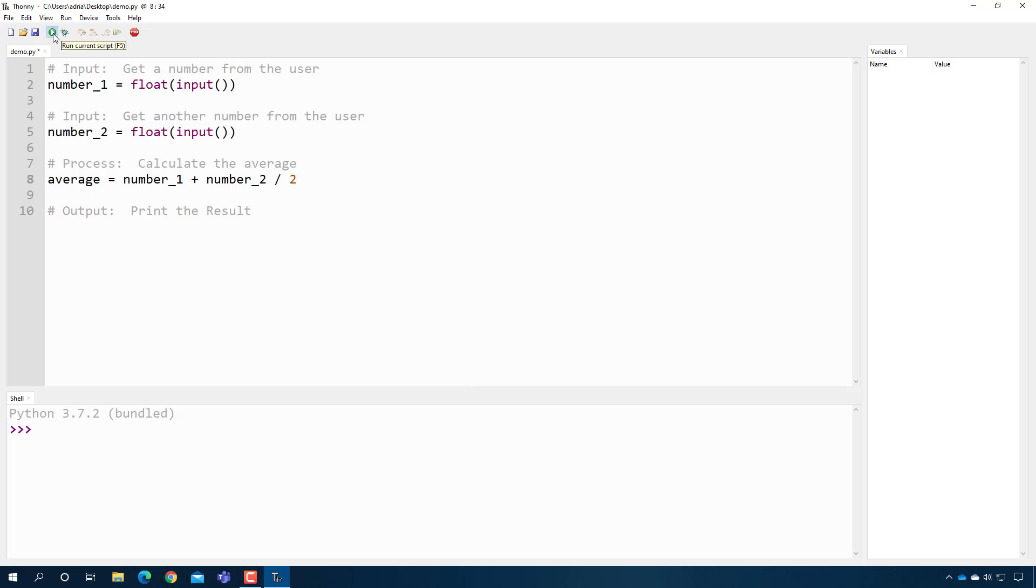If I was to test it, which I encourage all of you to do, what we should do is we should pick two numbers. So for example, 3 and 4 should give us 3.5. That should be the average between those two numbers. But if we look over here on the right, we'll see that it gives us 5.